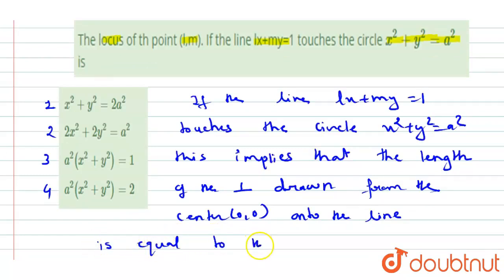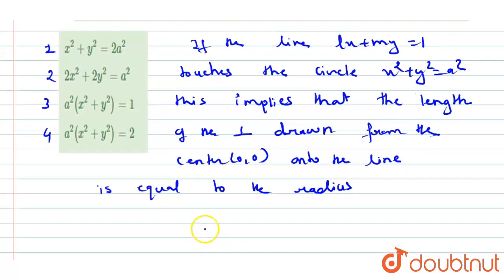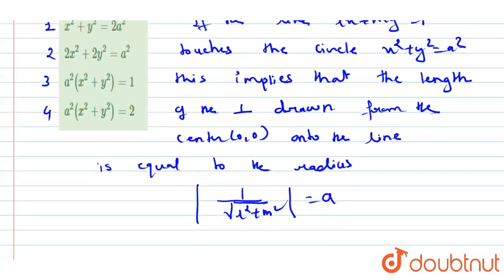According to the condition, the formula is perpendicular distance equals ax1 + by1 + c divided by root of a² + b². So we can write 1 divided by root of l² + m² equals a.